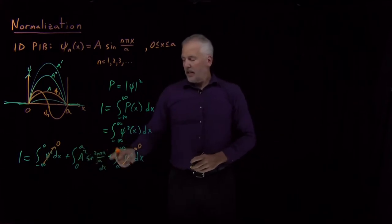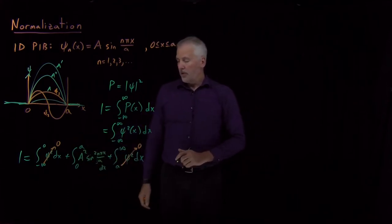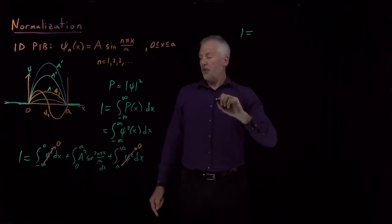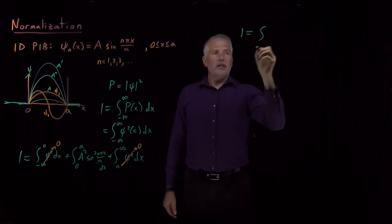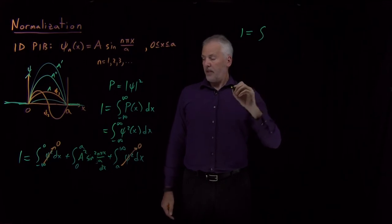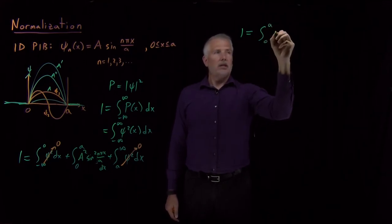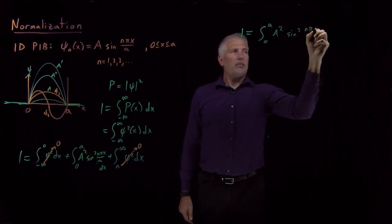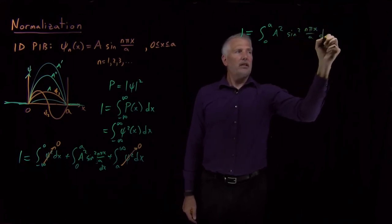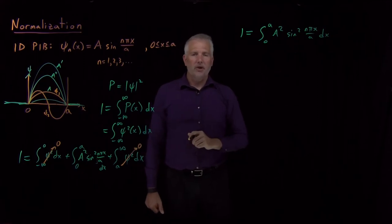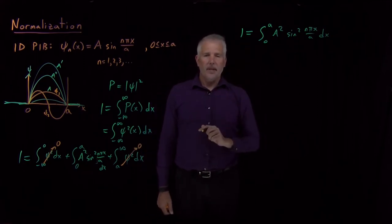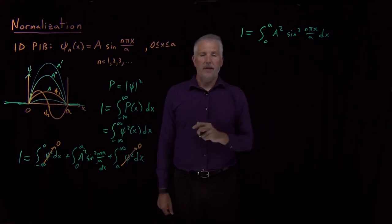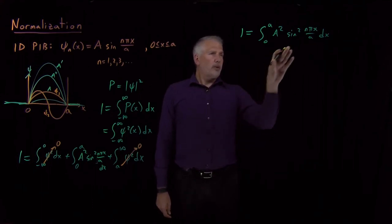So that's the integral I want to do. I want to make sure that when I integrate sine squared nπx over a between zero and a, I want to make sure I get one. There's only going to be one value of A that allows this integral to come out and have that value. So how do we do that integral?